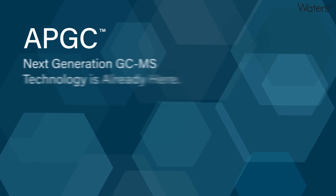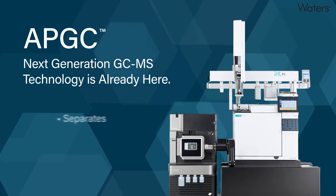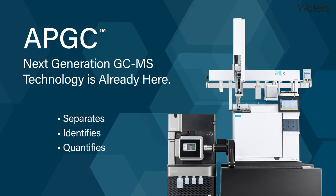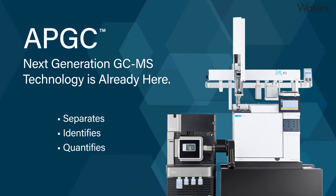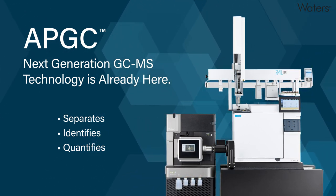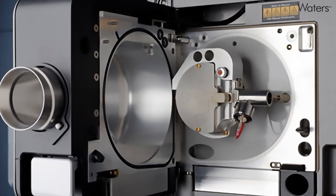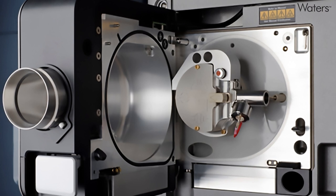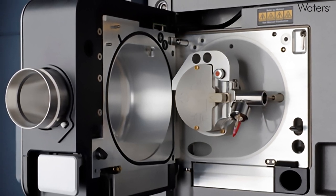GC-MS is an analytical technique that separates, identifies, and quantifies compounds in a sample using gas chromatography combined with mass spectrometry. It has widespread applications in fields such as environmental science, food testing, and pharmaceutical analysis.